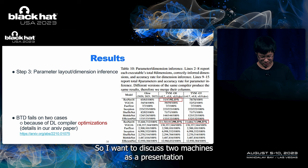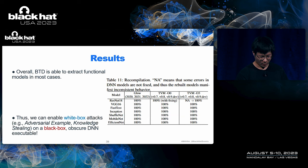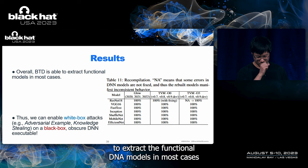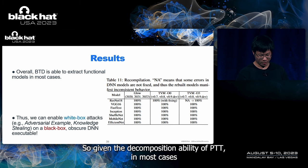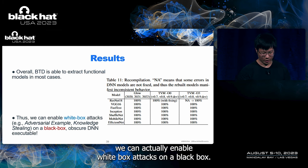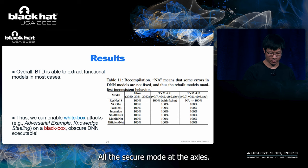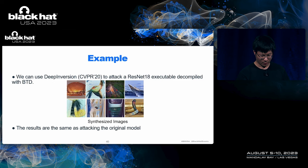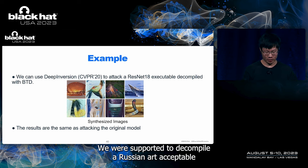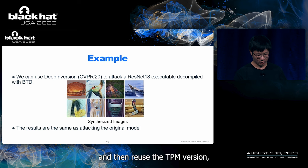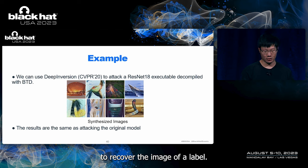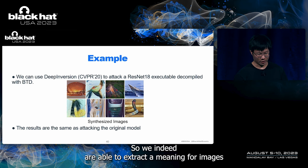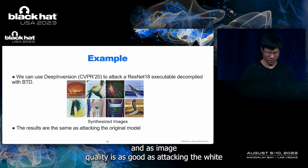Overall, BTD is able to extract functional DN models in most cases, except the ResNet model compiled with TVM. Given the decompilation ability of BTD, in most cases we can enable white box attacks on black box, obscure DN executables. As an example, we use BTD to decompile a ResNet executable and reuse the GAN-based inversion method published at CVPR '20 to attack the decompiled model. This attack tries to recover the image of a label, and we are indeed able to extract meaningful images with quality as good as attacking a white box model.